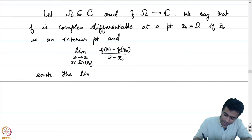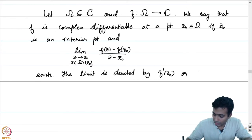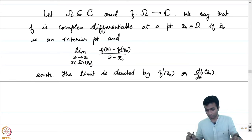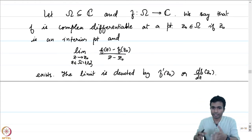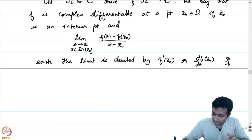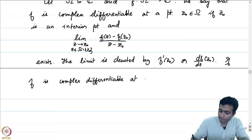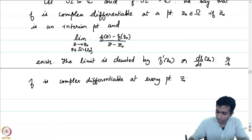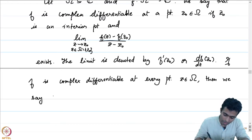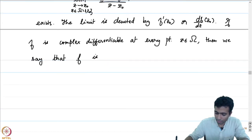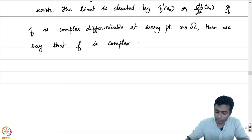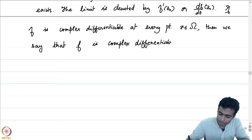If this limit exists, we say that f is complex differentiable at the point z₀. The limit is denoted by f′(z₀) or df/dz at z₀, and note that f′(z₀) is a complex number. If f is complex differentiable at every point z in Ω, then we say that f is holomorphic on Ω. I will slowly start using the word holomorphic on Ω.